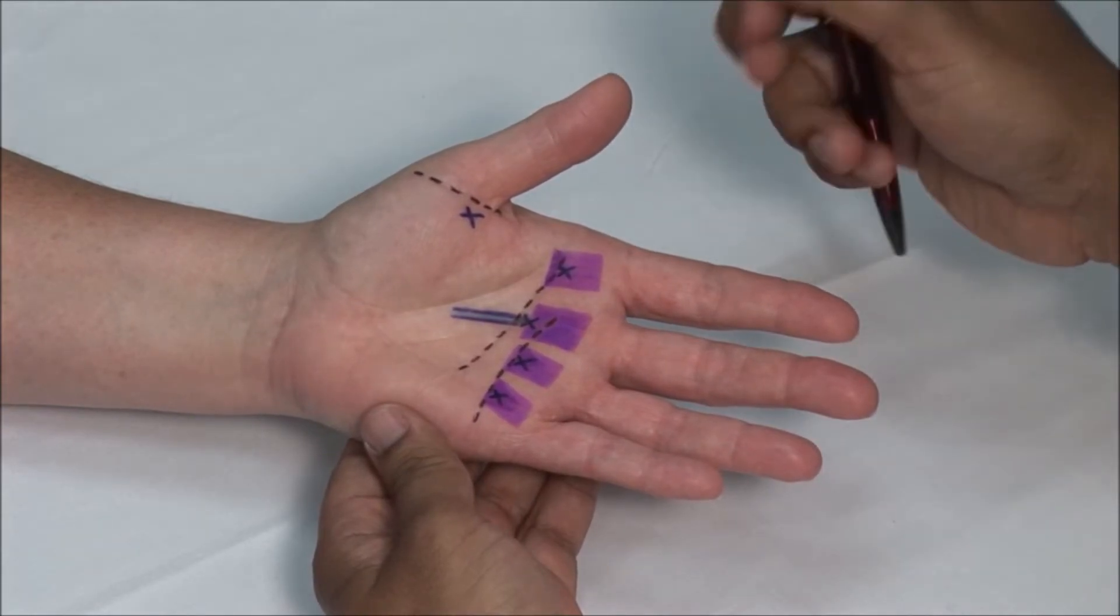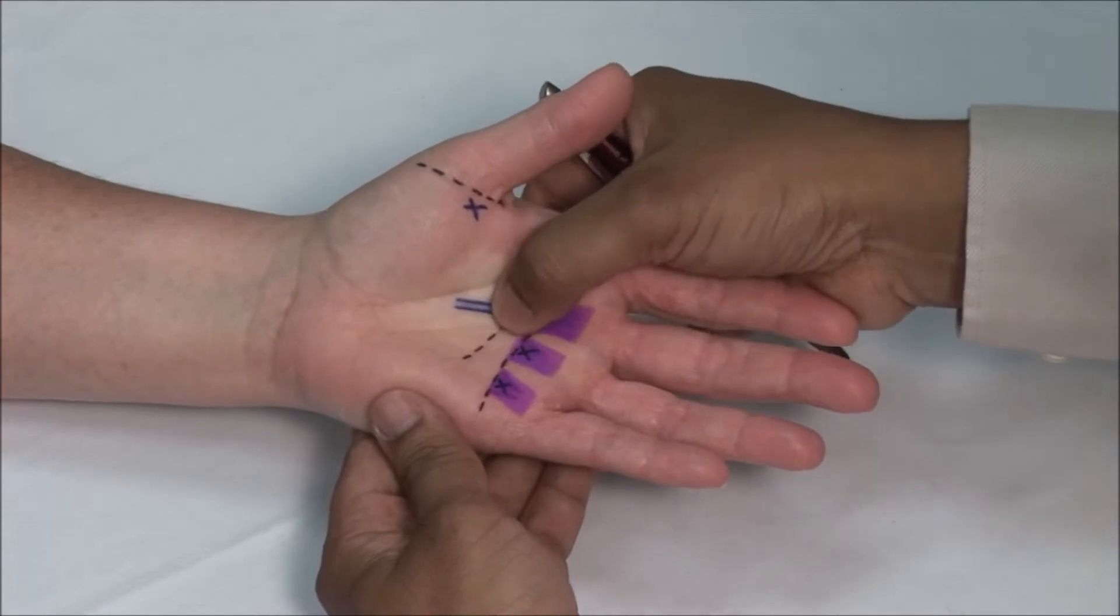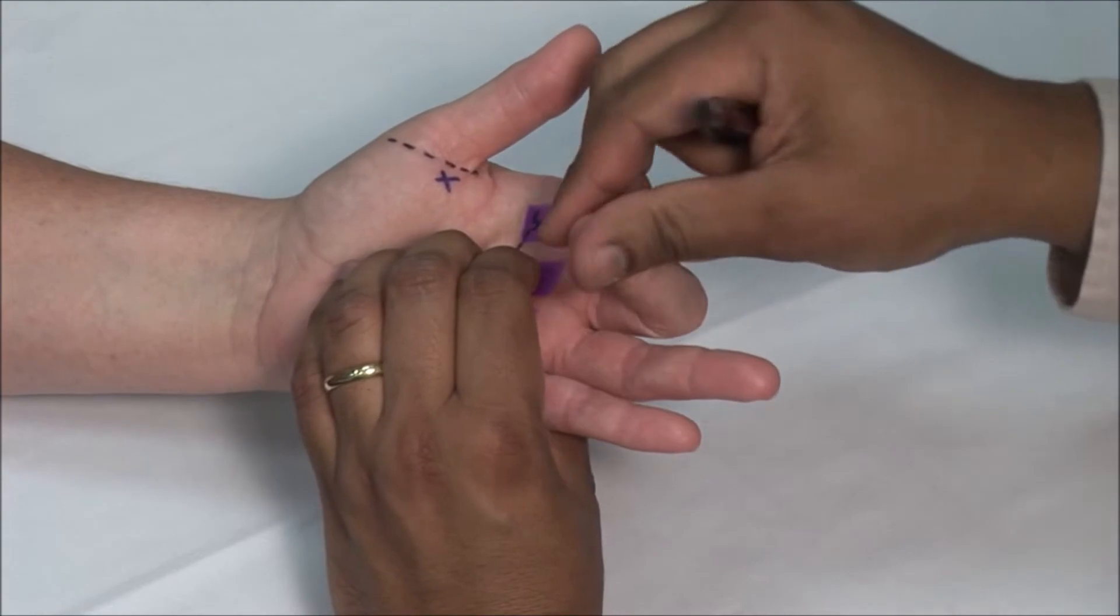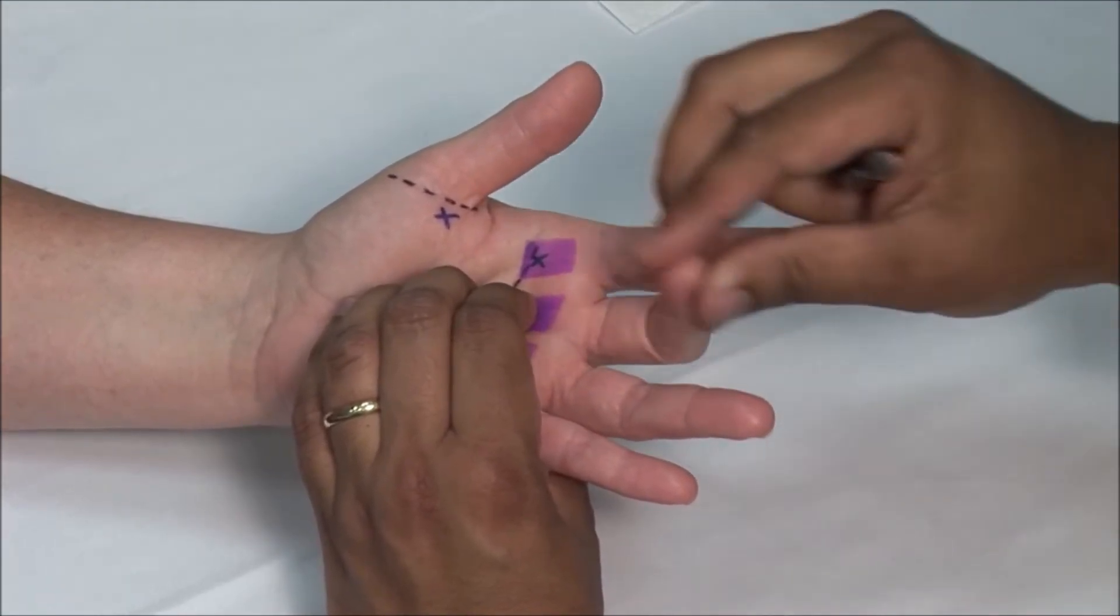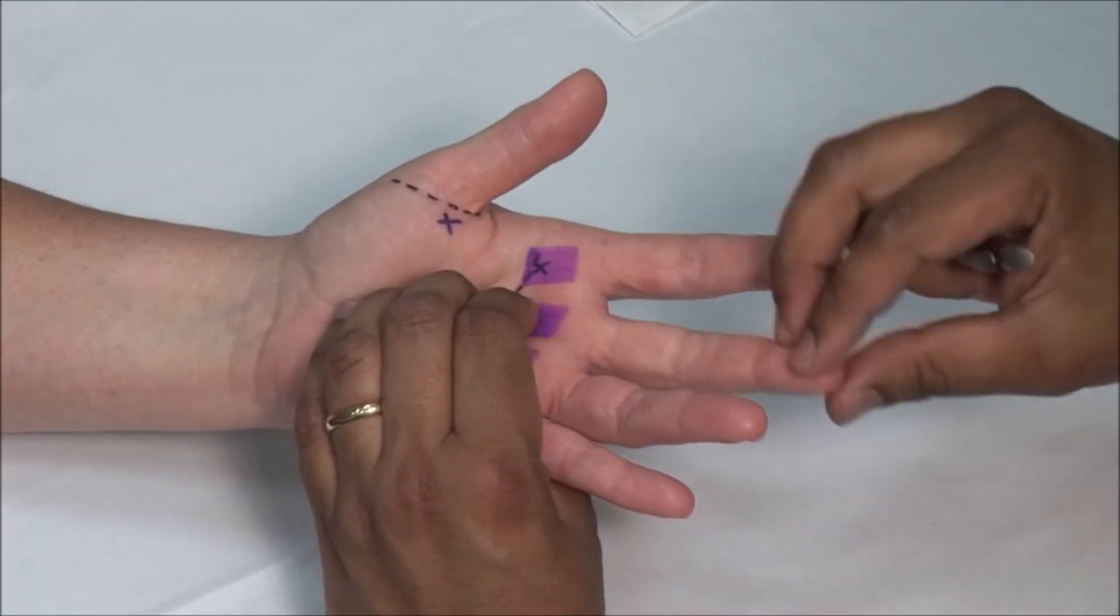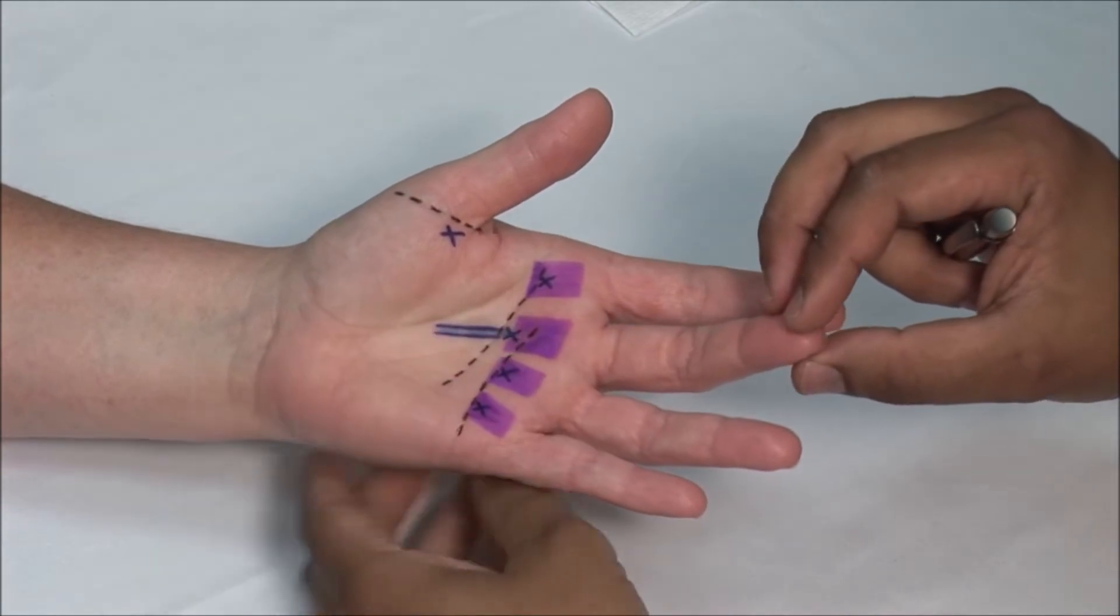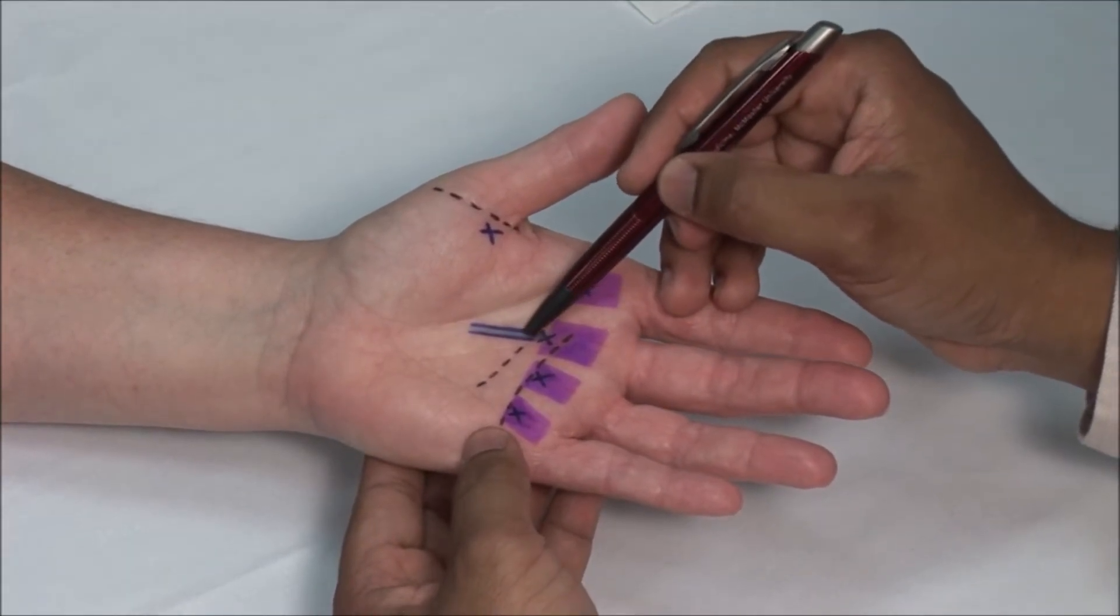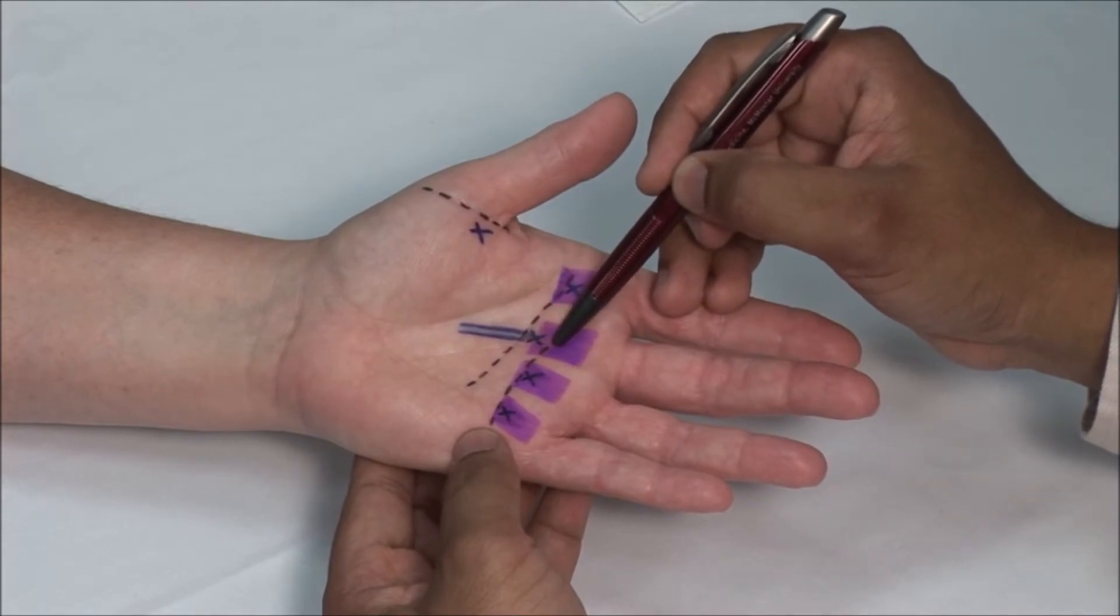You can examine the tendon for tenderness by palpation and you can also check for tendon crepitus, nodules, and triggering or locking of the finger. Swelling and nodules along the tendon can cause trigger finger as the affected area gets caught at the A1 pulley.